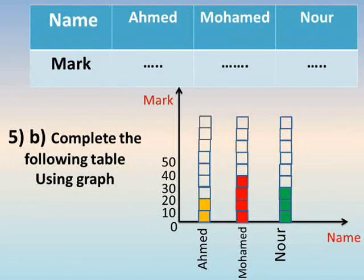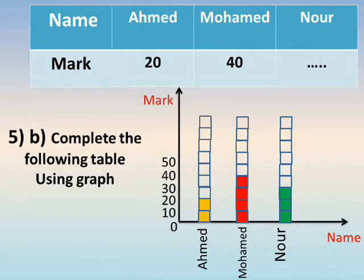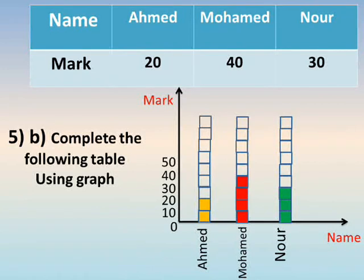Number five B: complete the following using the graph. Ahmed is colored orange — up to twenty, two squares, each square equals ten, so Ahmed has twenty. Mohamed is colored red — up to forty, four squares, equals forty. Nour is up to thirty, three squares, equals thirty. So: Ahmed twenty, Mohamed forty, Nour thirty.